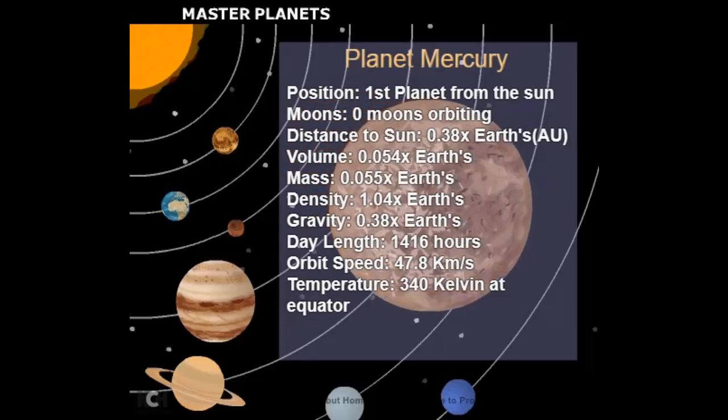And the Jovian planets are Jupiter-like planets: Jupiter, Saturn, Uranus, and Neptune.